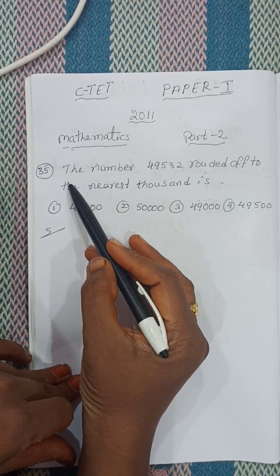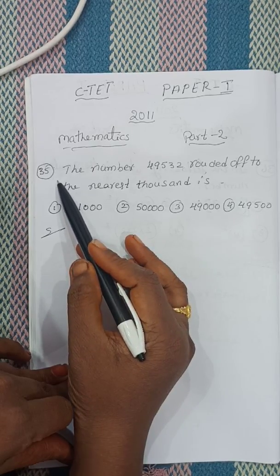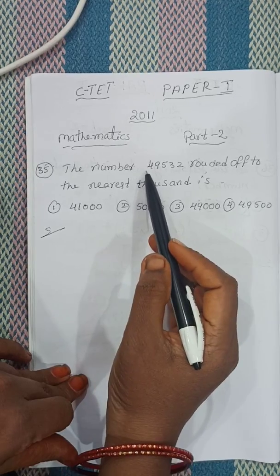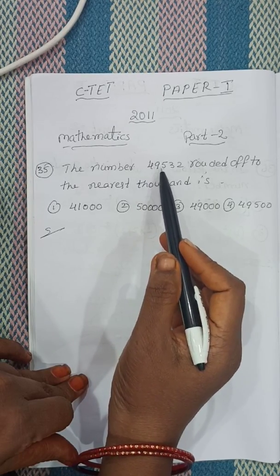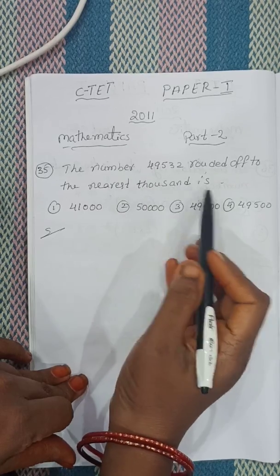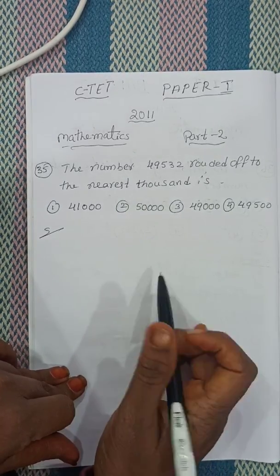Today's sum is number 35. The number 49,532 rounded up to the nearest thousand. What is that?